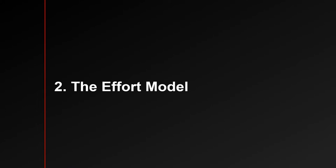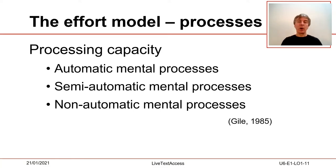Section 2: the effort model. In 1985, Daniel Giles proposes the so-called model d'effort, or effort model, based on the observation of mistakes made by trainees in simultaneous interpreting. Daniel Giles realizes that trainees make mistakes so banal that the reason cannot be a poor command of the language. He understands that this is due to other reasons — mainly that our brain has to be trained if we want to do more than one non-automatic thing at the same time.